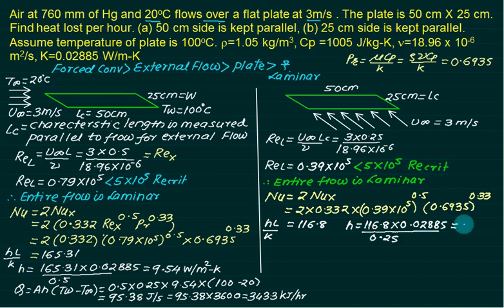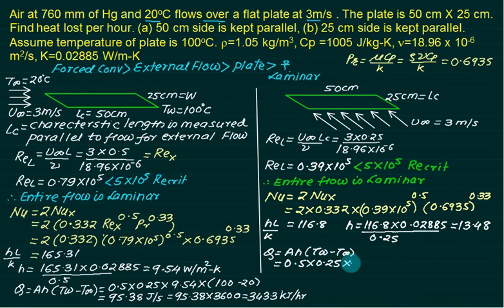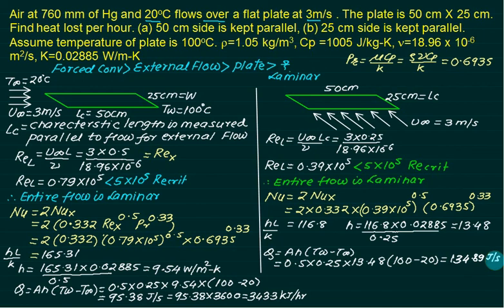Heat transfer for Case 2: Q = A·h·(T_w − T∞), with area = 0.5 × 0.25 m², h = 13.48 W/m²·K, T_w = 100°C, T∞ = 20°C. This gives Q = 134.89 W. Converting to kilojoules per hour gives 485.9 kJ/hr.